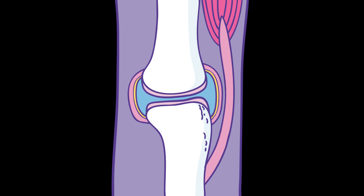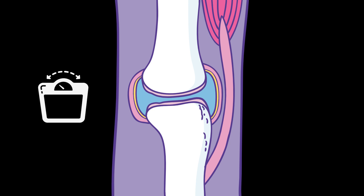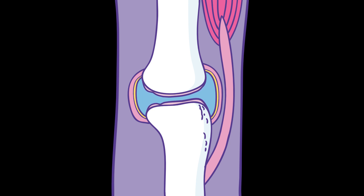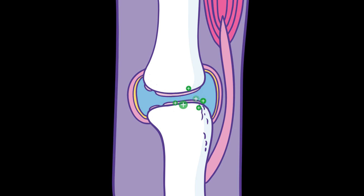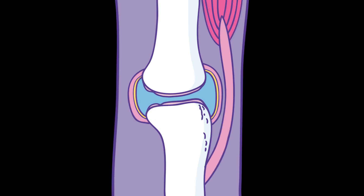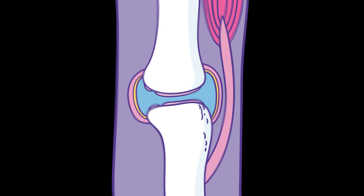This can happen naturally during the aging process. There are also things that can make this more likely, for example being overweight or an injury. Once the cartilage has started to thin or roughen, the body puts in place a repair process to try to make up for the loss of cartilage.